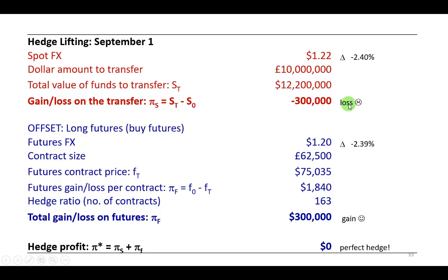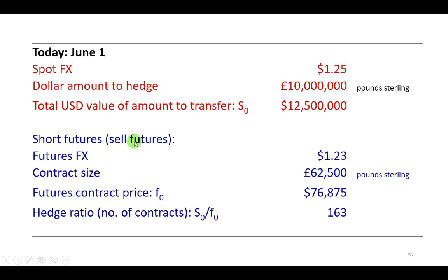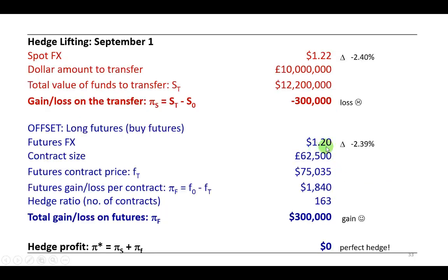Now, but how about the futures markets? Let's see what's up. You're going to have to offset by buying back futures. Remember, you sold futures for $1.23. So you're going to buy it back for $1.20. It fell by about 2.4% as well.